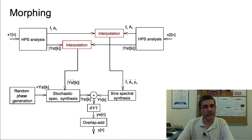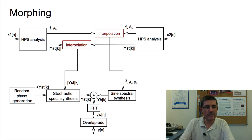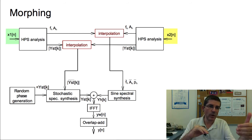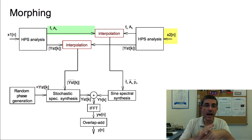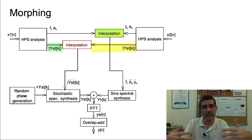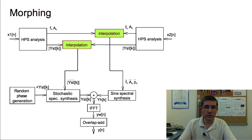Now let's talk about morphing using the harmonic plus stochastic model. We have two sounds, x1 and x2. Basically what we are going to do is interpolate the two representations. From x1 we obtain the frequencies and amplitudes of the harmonics and the stochastic approximation of the residual, and we do the same for x2. Then we interpolate these two sets of functions — the frequencies, the magnitudes of the harmonics, and the stochastic envelopes of the residual — and synthesize back the output sound.